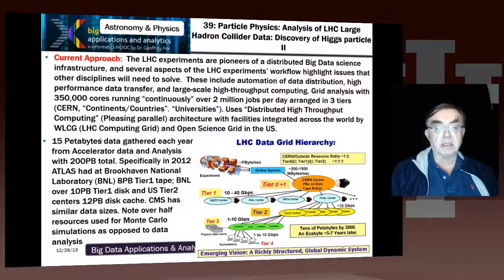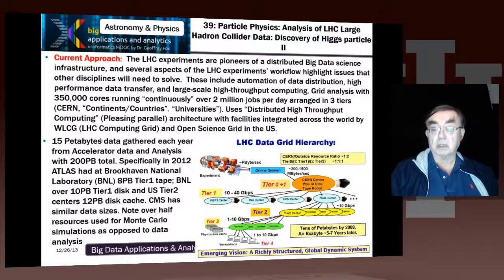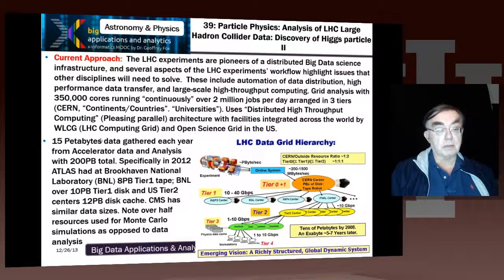We have to analyze this data through one of the major resources: the LHC grid, which has 350,000 cores running and 2 million jobs per day. The LHC analysis is organized into three tiers. CERN is tier zero. Tier one is at the country level — in the US, tier one is at Fermilab in Illinois, and there are tier ones in three other places in Europe. Then there are lots and lots of tier twos, and tier three is basically your local workstation. We have around 15 petabytes of data per year.